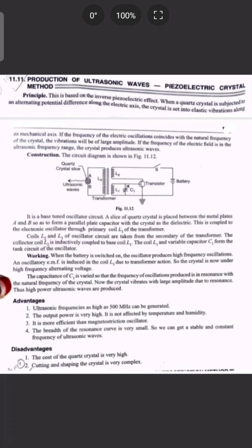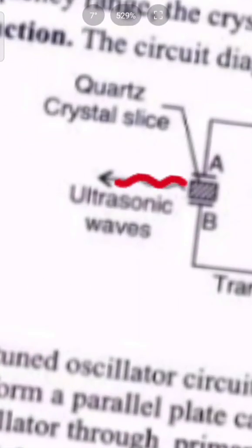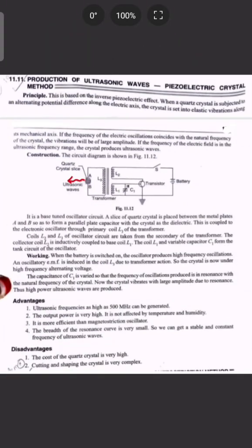If the frequency of the electric oscillation coincides with the natural frequency of the crystal, the vibrations will be of larger amplitude. If the frequency of the electric field is in the ultrasonic frequency range — that is, above the normal audible range of 20 to 20,000 Hz — the crystal produces ultrasonic waves. This is the principle.